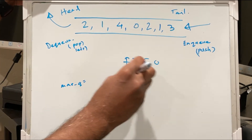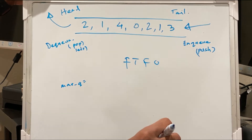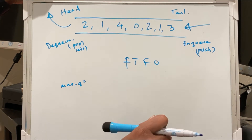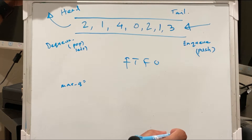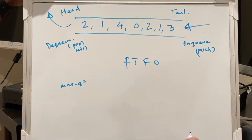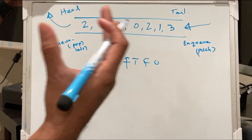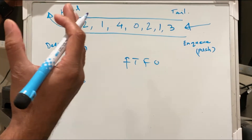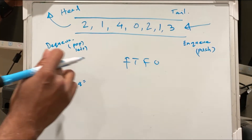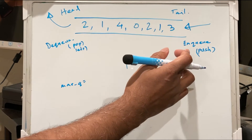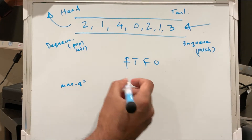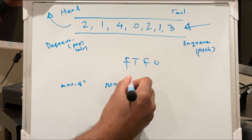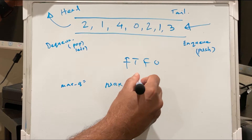But in today's problem we will not discuss the basic properties of queue — I'm assuming you are already familiar with those. In today's problem we will design a new type of queue which supports both the dequeue and enqueue operations as well as a max API operation.